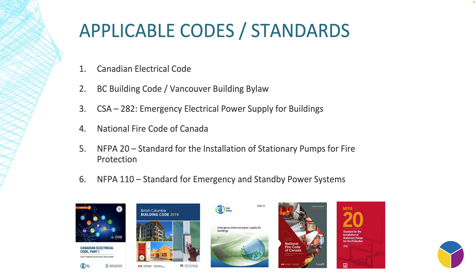There are many codes and standards that apply to emergency power and lighting system design. The first one is the Canadian Electrical Code. There are two sections: Section 34, talking about fire pumps and fire alarms, and Section 46, talking about emergency power system design. We also have a building code — a core building by-law we need to comply with.